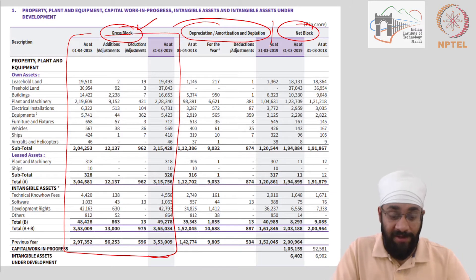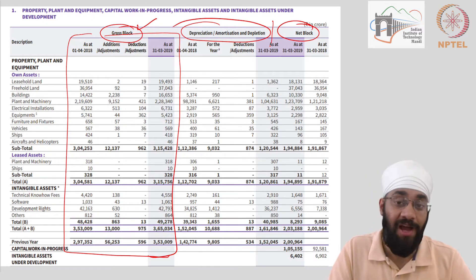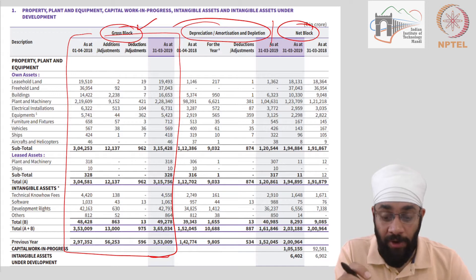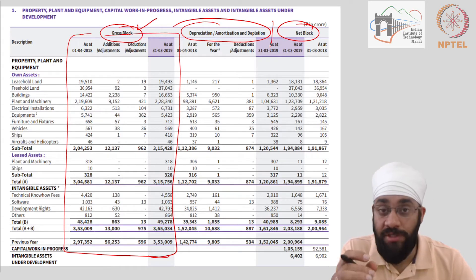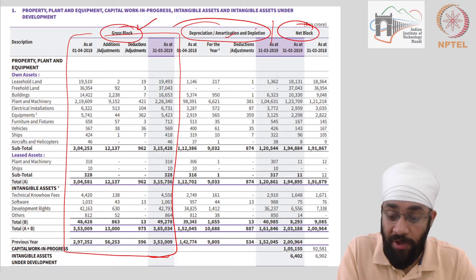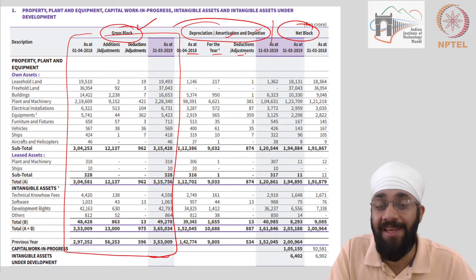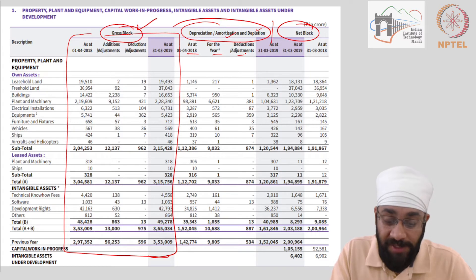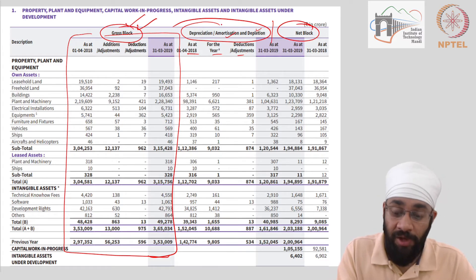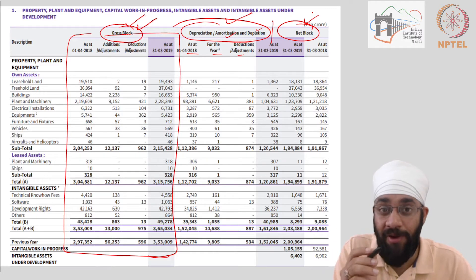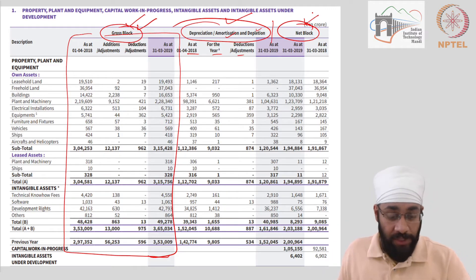In a company like Reliance, which is the largest in India, you will have many complex transactions. But the idea is if you understand the basic principles, you can look into more details — you can further research what amortization and depletion are, and why they have three columns within it. All of this is only functional knowledge. The technical knowledge you already have. The principle is that from the cost, you have to deduct depreciation and show the final value in the balance sheet. The rest can be figured out on your own.